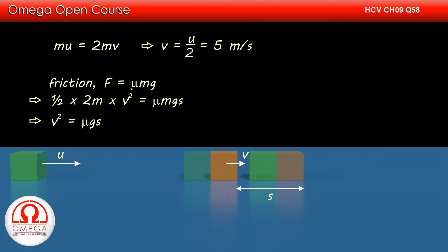Dividing both sides by m, we get v² is equal to μgs or s is equal to v² by μg. Putting the values, we get s is equal to 25 divided by 0.1 into 10 or 25 meters. This is answer to part B of the question.